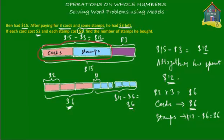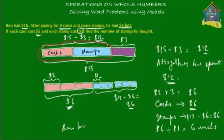He spent $6 on the stamps and each stamp was $1. So how many stamps did he buy? He spent $6 divided by $1, which equals 6. So Ben bought six stamps — there will be six of these blue boxes. The answer is Ben bought six stamps.